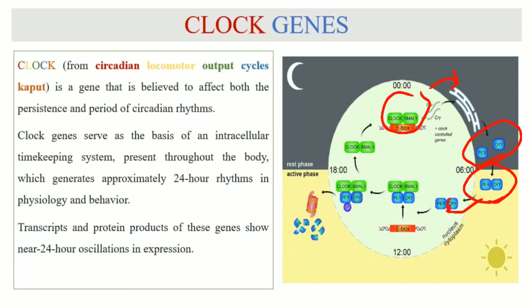The PER and CRY complex binds with the CLOCK and BMAL1 complex. This results in the separation of CLOCK and BMAL1 complex from the E-box.